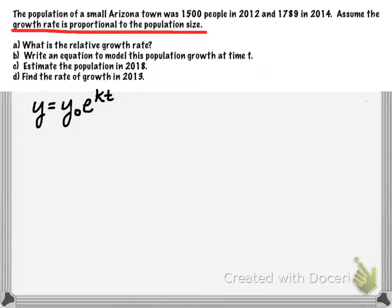In part a, when it asks us for the relative growth rate, that means we're trying to find the value of k.